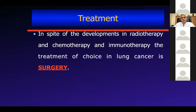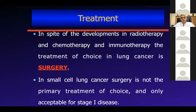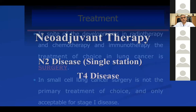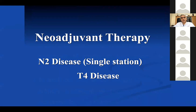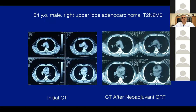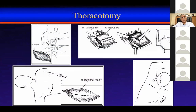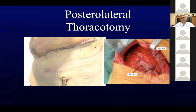Neoadjuvant therapy is performed for N2 disease (single station) or sometimes T4 disease. For example, this is the initial CT of one patient with T4 disease — after neoadjuvant chemoradiotherapy and with N2 disease before surgery, we performed lobectomy. We used to do thoracotomy; some patients we still perform thoracotomy. But during the last 30 years, thoracic surgeons sought less invasive methods. Thoracotomy is a standard procedure but the incision is large and collateral damage is higher.